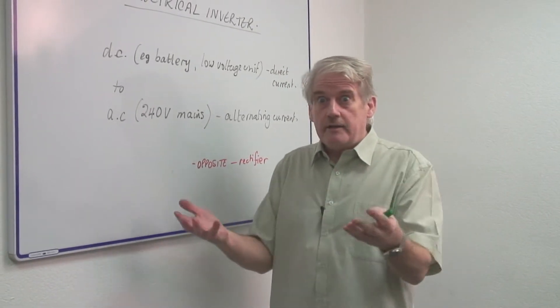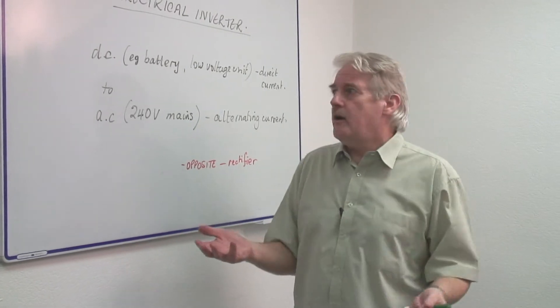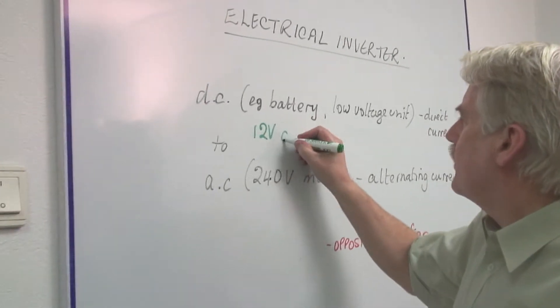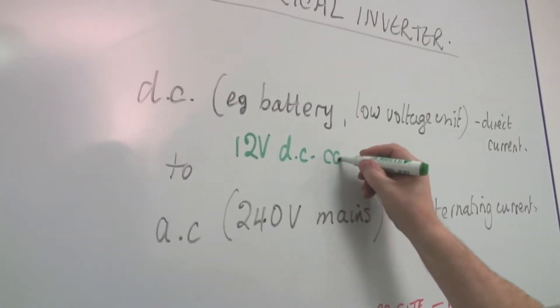You've got your laptop and you want to run it from the car, but the car battery is 12 volts DC. So 12 volts DC, for example a car battery.